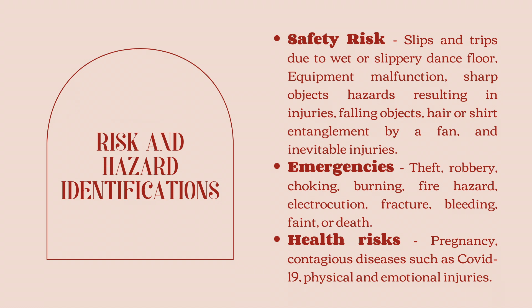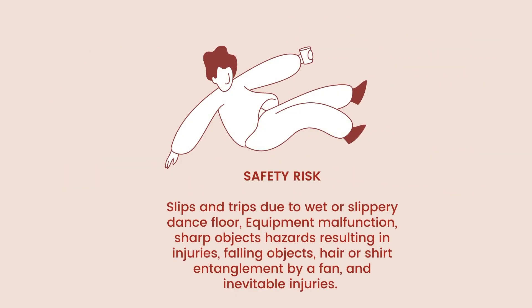In Dan Studio Company, the criteria to identify a risk and hazard are divided into three main divisions. The first one is safety risk, which includes slips and trips due to wet or slippery dance floor, equipment malfunction, sharp objects hazard resulting in injuries, falling objects by suspended items, hair or shirt entanglement by a fan, and inevitable injuries.